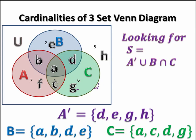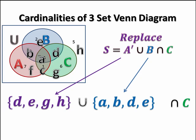So these are the sets that we need to perform set operations on, union and intersection. We're going to replace A complement with what it's equal to, the regions d, e, g, and h. And we're going to replace B with what it's equal to, the regions a, b, d, and e.